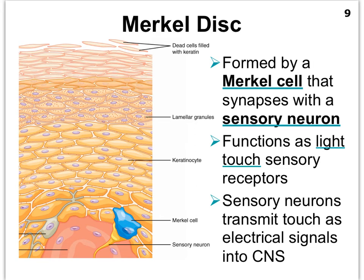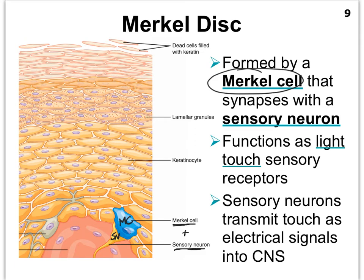Our last cell is called the Merkel cell, illustrated here in bright blue, and it is mostly found in the basal layer. Here we also see our melanocyte with its long arms, and the rest of the yellow cells are all keratinocytes. The Merkel cell sits in the basal layer in very close proximity to the beginning of a sensory neuron. The Merkel cell plus the sensory neuron together form our Merkel disc.